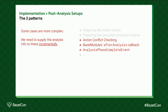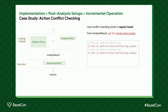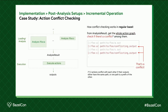To demonstrate, here's a case study: action conflict checking. The way it works now is that from the analysis results you extract the whole action graph — this gives you all the outputs expected within the build — and then you check if there's a conflict among them. Two actions conflict with each other if their outputs either have the same path or one path is a prefix of the other.